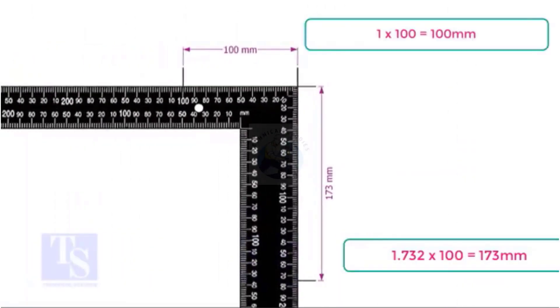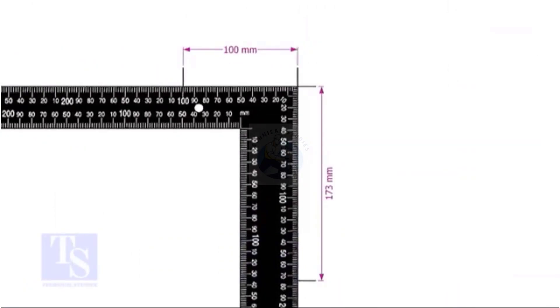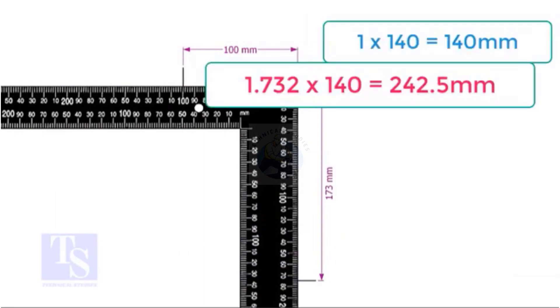In this example, I multiplied both the set and the run with 100. You can choose any number, for example, if you choose 140, multiply 1 by 140 and multiply 1.732 by the same number.